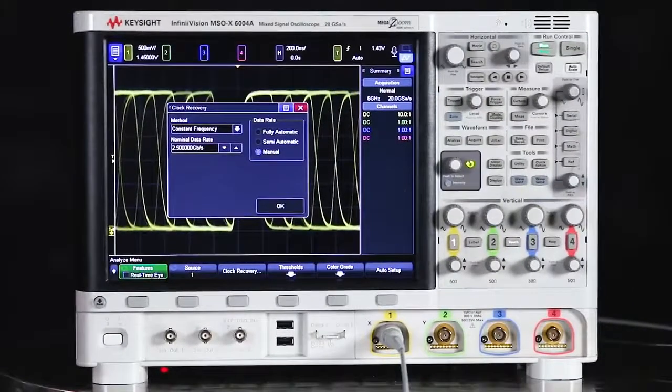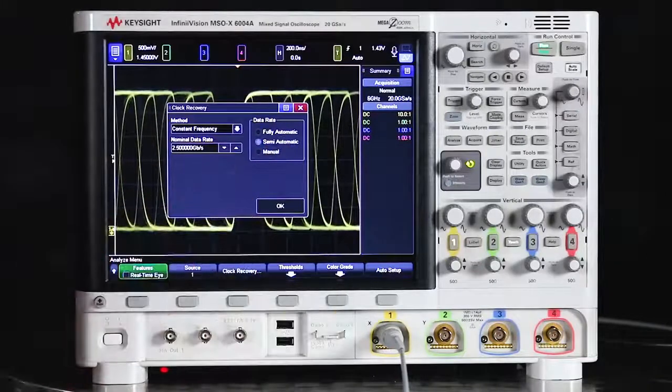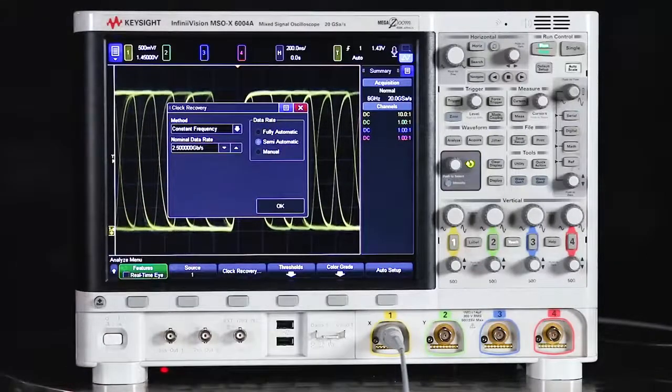So since we have a rough estimate of what the bitrate of the signal is, we want to use the semi-automatic option. So the scope will use that bitrate that we found in order to calculate the exact ideal bitrate of the signal.